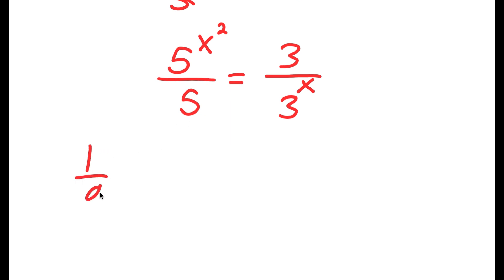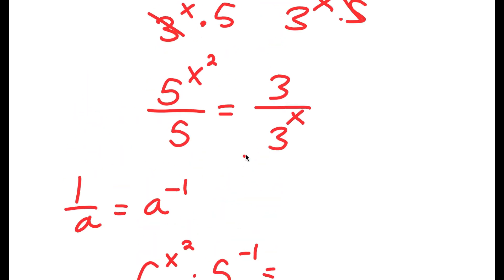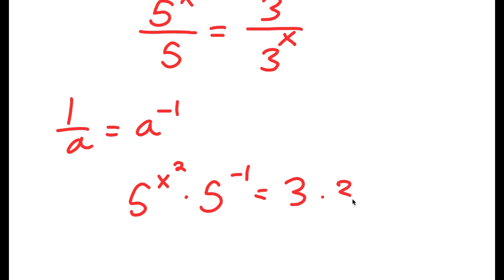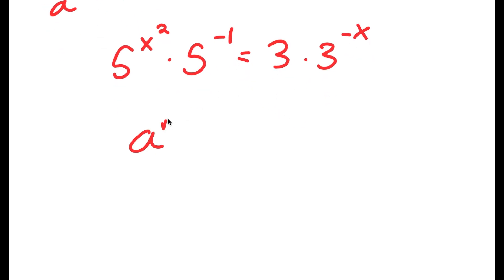If I have something in the form 1 over a, this is the same as a to the power of negative 1. So 5 to the power of x squared over 5 is the same as 5 to the power of x squared times 5 to the power of negative 1, which equals 3 times 3 to the power of negative x. Using the rule a to the m times a to the n equals a to the m plus n,